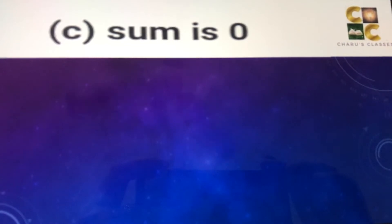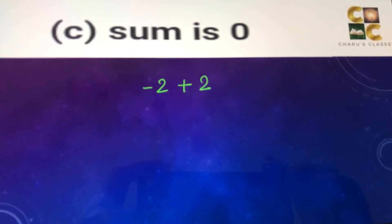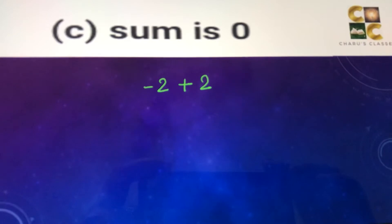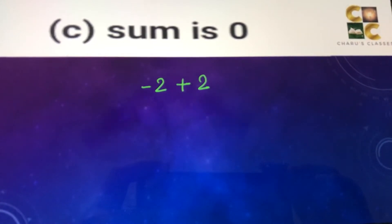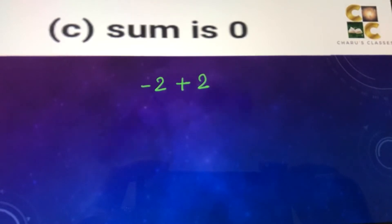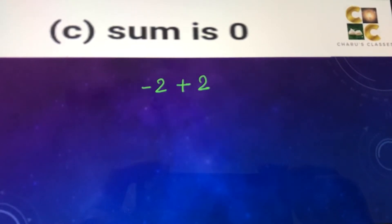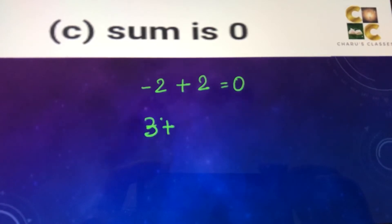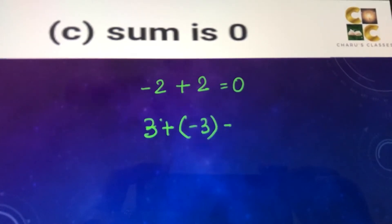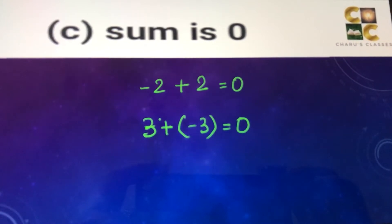Part C: sum is 0. This is simple — you can take any number with its additive inverse and you will get the sum as 0. Additive inverse means just changing the sign of the integer. For example, minus 2 plus 2 equals 0. The additive inverse of minus 2 is 2, and vice versa. So options like minus 2 plus 2 or 3 plus minus 3 both equal 0.